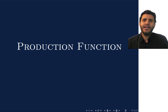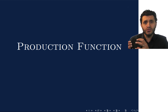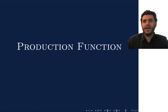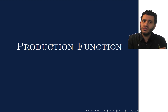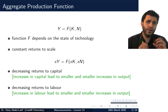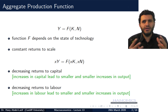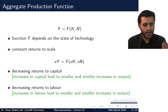Before we look at that, we need to understand the production function. The production function is a relationship between inputs and outputs. On the right-hand side we have labor, capital, and technology, and these together determine the output on the left-hand side. This relationship can be summarized as: Y equals f, where f is a function that depends on the state of technology, with two inputs — K for capital and N for labor.